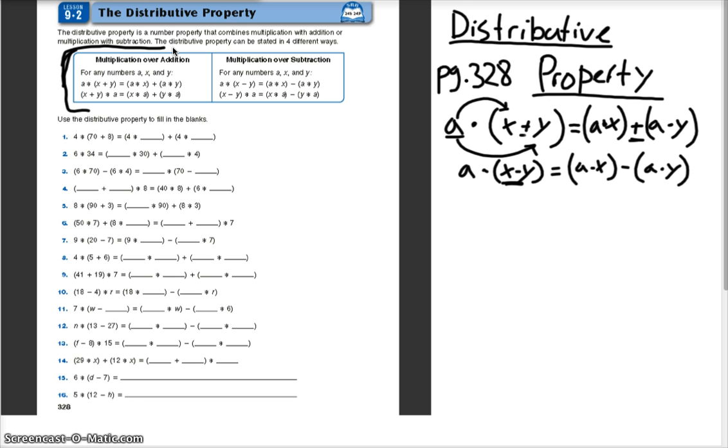So looking at number one, we have 4 times 70 plus 8. So what it says, it says use the distributive property to fill in the blanks. So I need to multiply 4 times 70. And I also need to multiply 4 times 8. And I add those together, and I would get the answer.